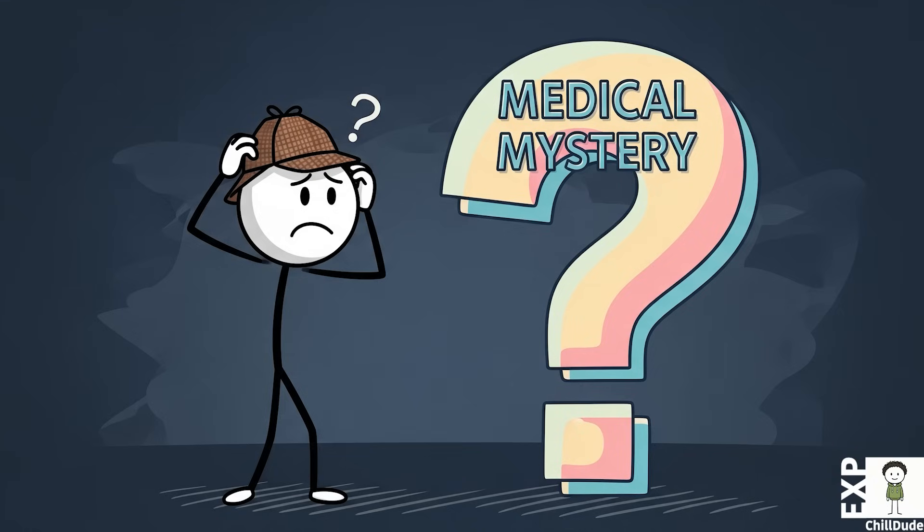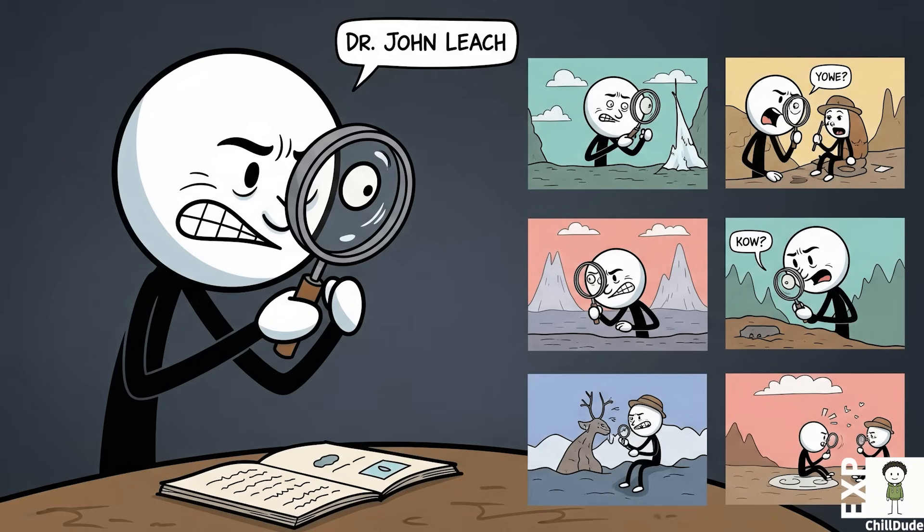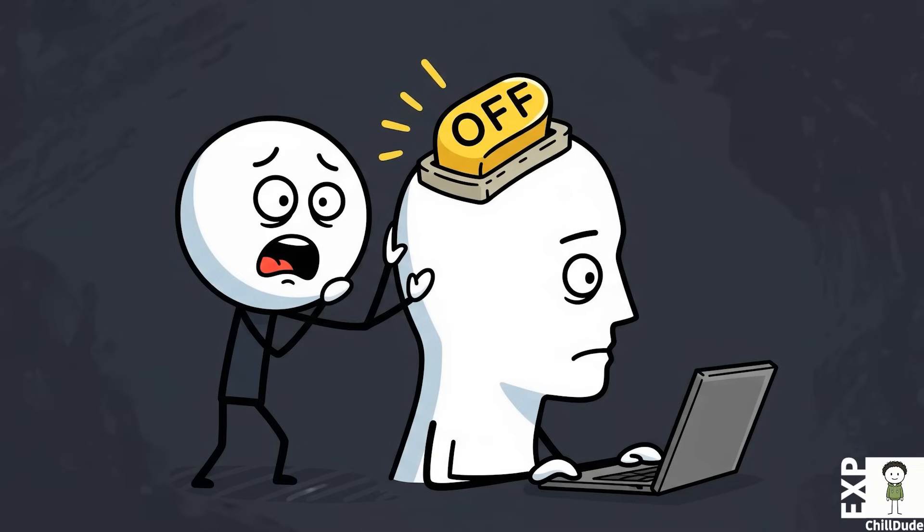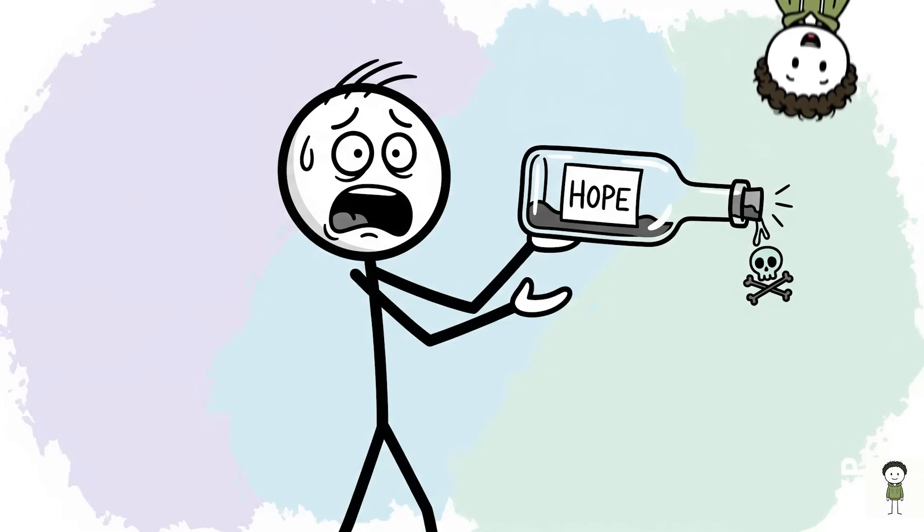For decades, it was a medical mystery. But thanks to the work of researchers like Dr. John Leach, a survival psychologist from the United Kingdom, we are beginning to understand the chillingly precise mechanism behind what he termed give-up-itis. It is the discovery of the human off-switch, and the revelation that the belief in hopelessness can be as lethal as any poison.